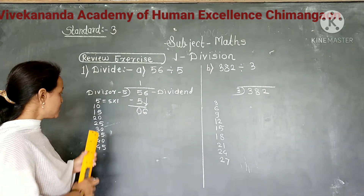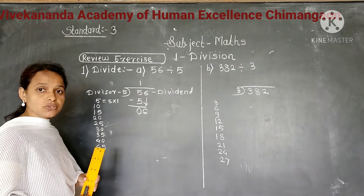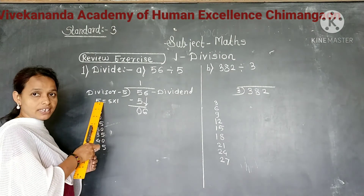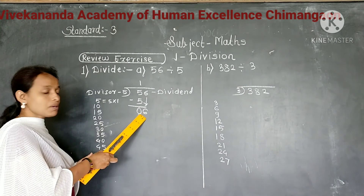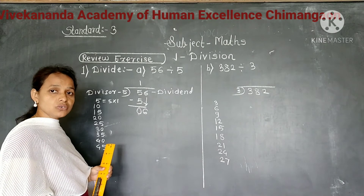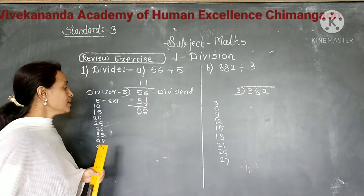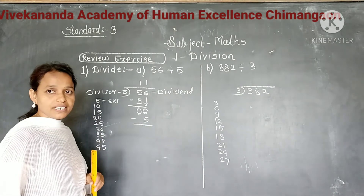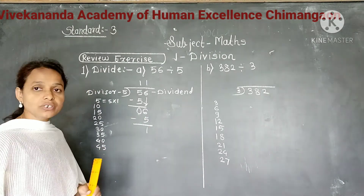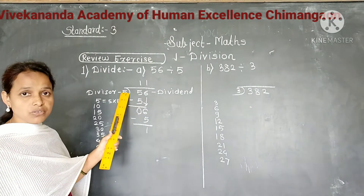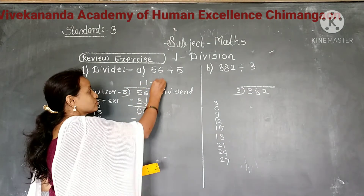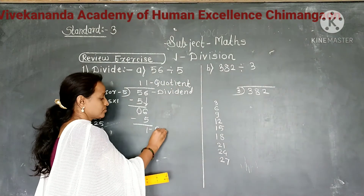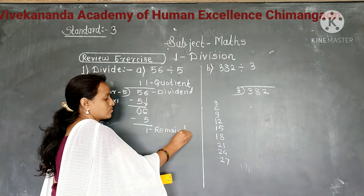Next digit 6, we bring down. Now we divide 6 by 5. But 6 is not in the multiplication table of 5. So less than 6 is 5, which comes in the first place of the multiplication table of 5. So we divide 6 by 5, it gives 1 as a quotient. Write 1 as a quotient in the ones place, and write product 5 below 6. Subtract, it gives 1. So dividing 56 by 5 gives 11 as a quotient and 1 as a remainder.